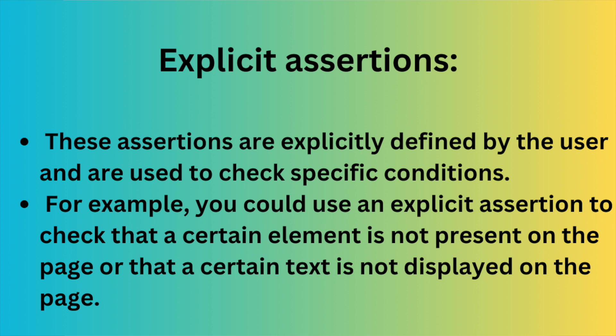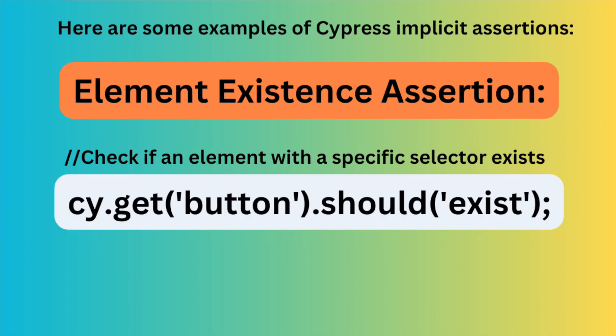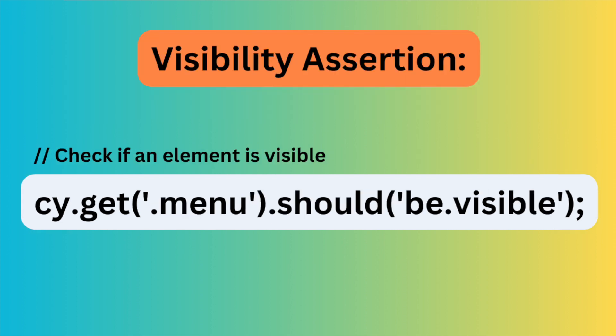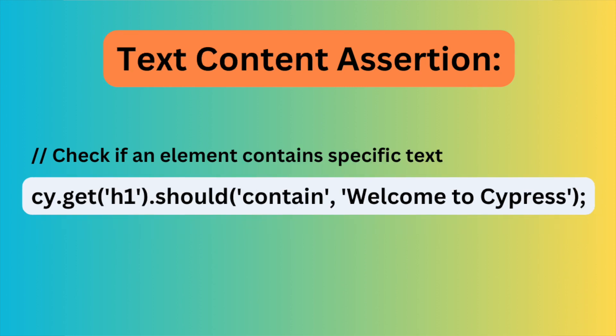Now let's look into explicit assertions. These assertions are explicitly defined by the user and used to check specific conditions. For example, you could use an explicit assertion to check that a certain element is not present on the page or that certain text is not displayed. Here are some examples: an element existence assertion checks if an element with a specific selector exists — for example `.get` looking for a button. Visibility assertions check if an element is visible: we can do `.should('be.visible')`, which checks if the element is visible or not.